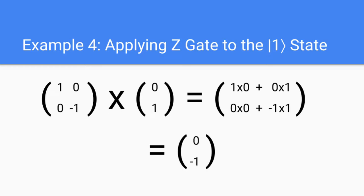Next, let's take a look at what happens when we apply the Z gate to a qubit in the |1⟩ state. On the left we have the Z gate matrix multiplied by the |1⟩ state matrix on the right. The resulting matrix has 1 times 0 plus 0 times 1 on top, and 0 times 0 plus negative 1 times 1 on the bottom. Adding these values up, we get 0 on the top and negative 1 on the bottom, meaning that when we apply the Z gate to the |1⟩ state, we get back the |1⟩ state with a negative in front of it, which I'll cover in more detail on the recap slide.